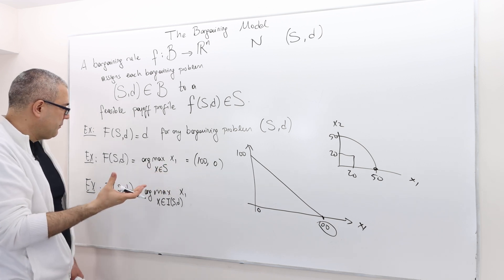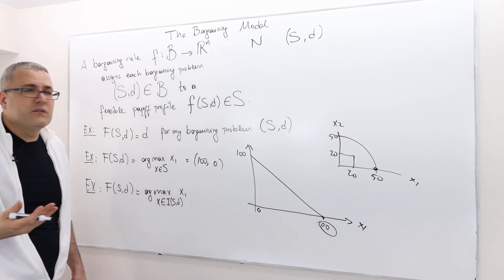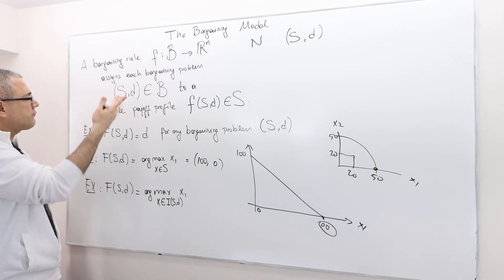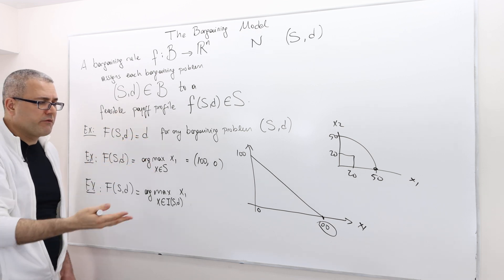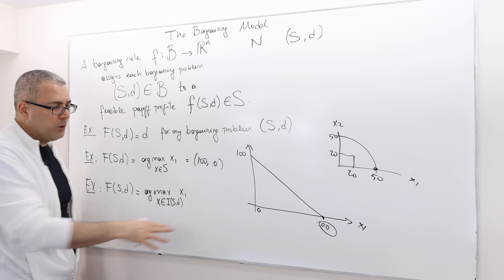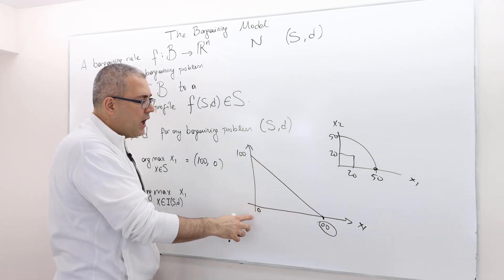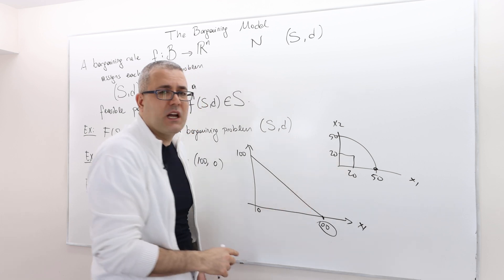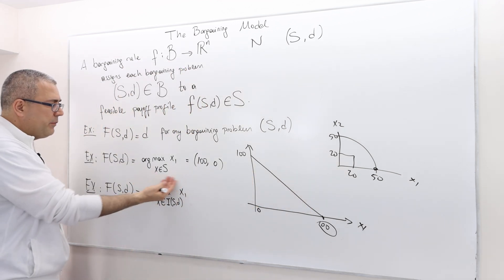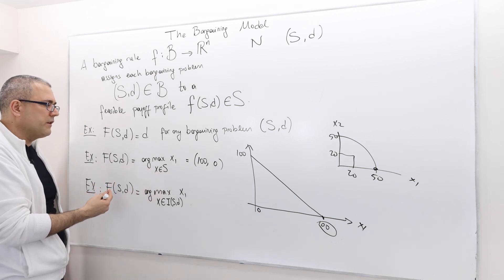Is this an acceptable or nice bargaining rule? It depends on your judgment. If you're looking for something individually rational, it doesn't always give me individually rational payoff. In this example, it did give me individually rational. However, here it's not going to give me individually rational payoff, because it basically doesn't really care about d, the disagreement.